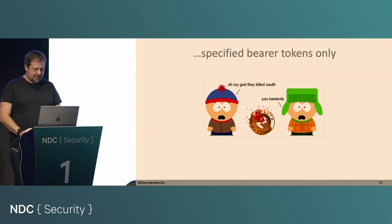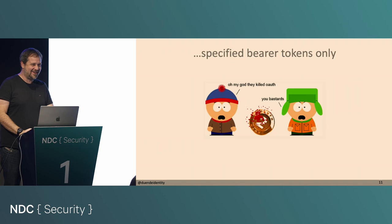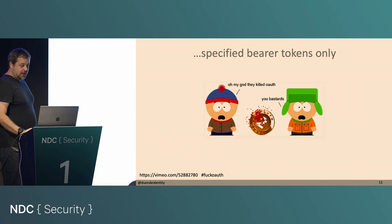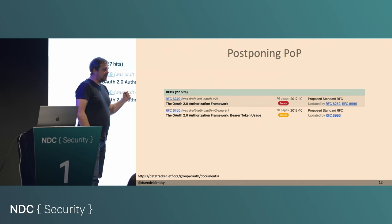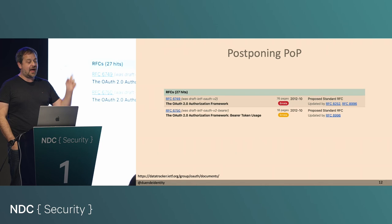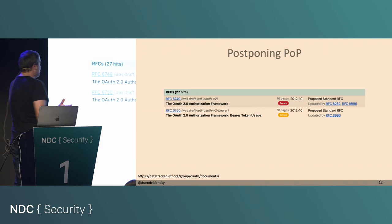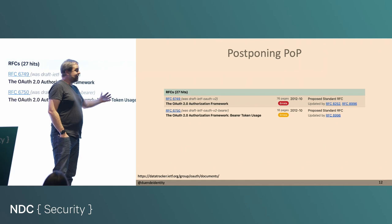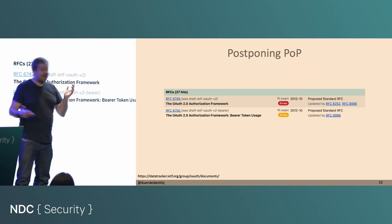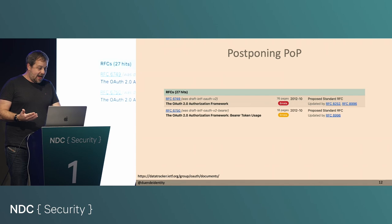Bearer tokens are less secure than signature-bound tokens — that's just a fact. Aaron made a big thing about leaving OAuth. One last thing he did before he left: he demanded that the OAuth spec be split into two specifications — one for how to acquire a token and one for how to use a token. And he said, if you're only doing bearer now, in the future create another spec called proof of possession usage. That spec was never created. That's 2012.